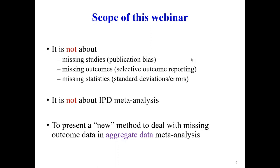We focus on studies in which some participants dropped out. We don't have individual participant data, so we only have aggregate data — effect estimates of individual studies recorded in the published literature — and we know that in some of these studies, some participants did not provide any outcome data. We will present a relatively new method to deal with this.